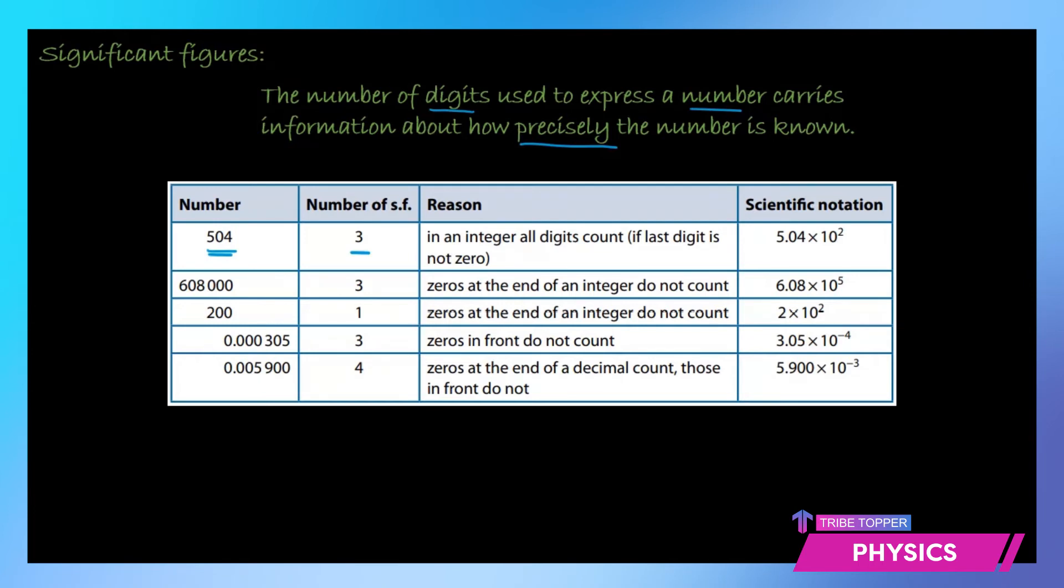And how do we write this in scientific notation? You put the decimal after the first digit and whatever number of digits you have after the decimal you will make that as the power of 10. So 504 will be expressed as 5.04 times 10 to the power of 2.